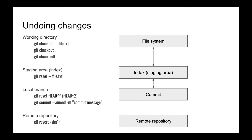Let's start from the first version - file system changes. We just added some file or changed an already created file, and we didn't commit this file, didn't add it to staging area, and just want to remove these changes. We can just copy the previous version and delete it manually, but what do we do if we have a few files? It's very difficult to handle a lot of files. For working with the file system we have the command `git checkout` with a file name. Let's try it.